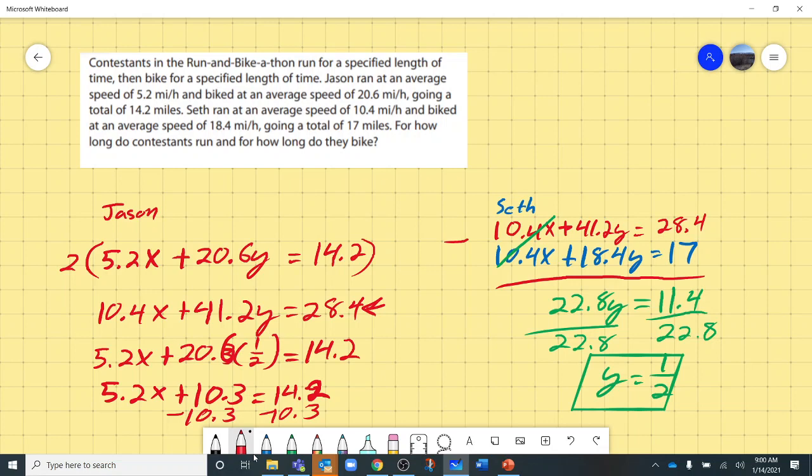And 14.2 minus 10.3 is 3.9. So we have 5.2x equals 3.9.